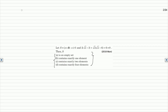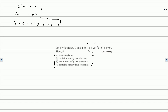For ease of manipulation, let t = √x - 3. Then √x = t + 3, and √x - 6 = t + 3 - 6 = t - 3. So we can represent the equation in terms of t, giving us 2|t + 3| + (t + 3)(t - 3).